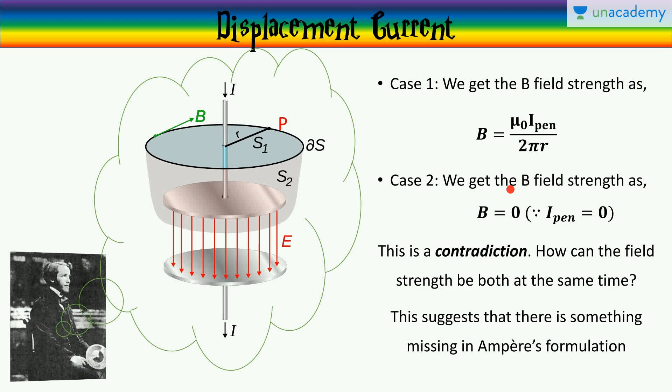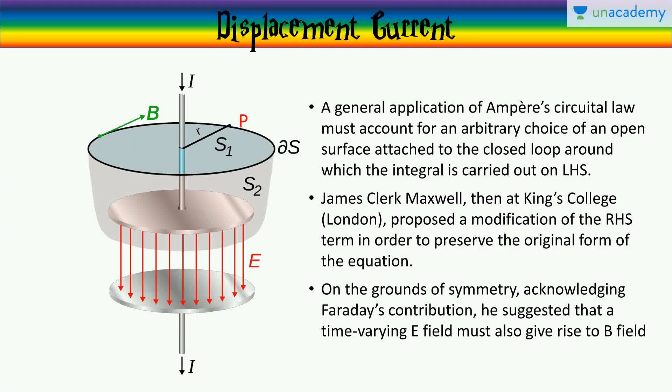But in case two, we get the field strength as zero, because there is no current which penetrates through the S2 surface at any point. Now, this is a contradiction. How can the field strength be both zero and this at the same time? This suggests that there is something missing in Ampere's formulation. A general application of Ampere's circular law must account for an arbitrary choice of an open surface attached to the closed loop, around which the integral is carried out on the LHS, the B.dl term.